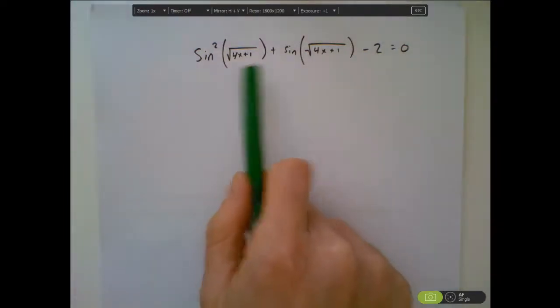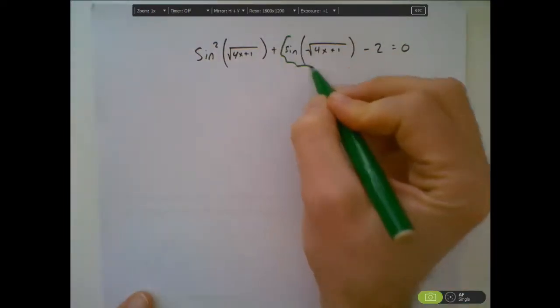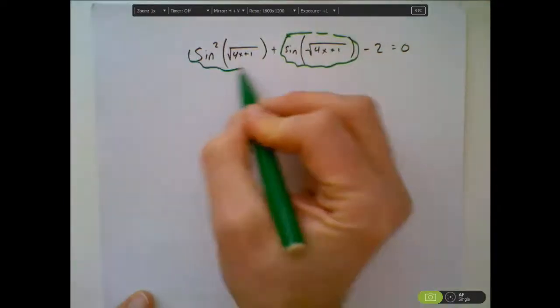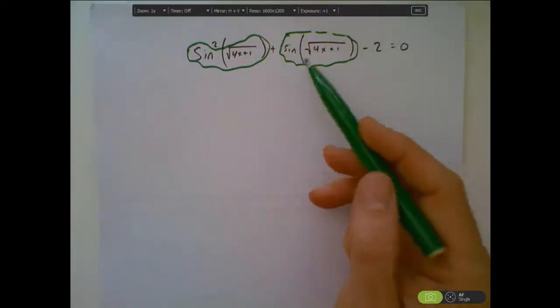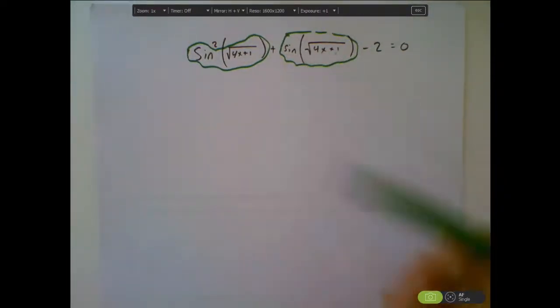Step one is we notice there's a repeated expression in here. Let's treat that expression that happens several times like it's a single unit, blob. And that makes sense because at the end of the day, what's inside here is the output of the sine function, which is going to be some number. So of course you can manipulate it like it's a number.